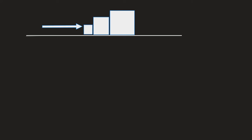Something like this — three boxes — and we're applying a force to the smaller box. The masses are M, 2M, and 3M, and we want the force between the boxes. There's a force between the first two boxes that pushes the 2M box to the right and an equal and opposite force pushing on the M box to the left — I'll call that N1. And there's a force between the 2M and 3M boxes — I'll call that N2.